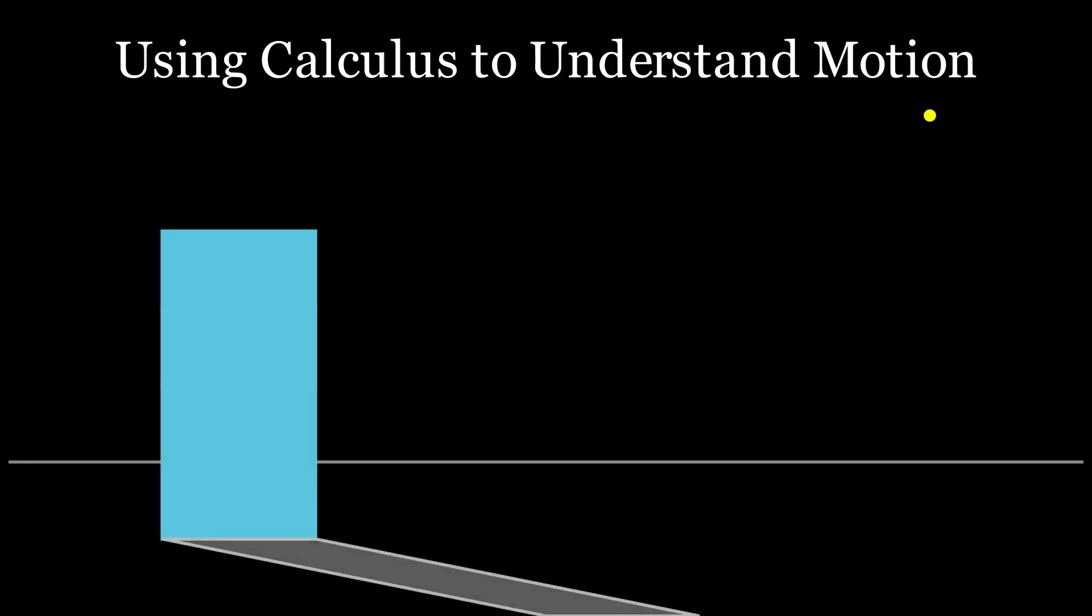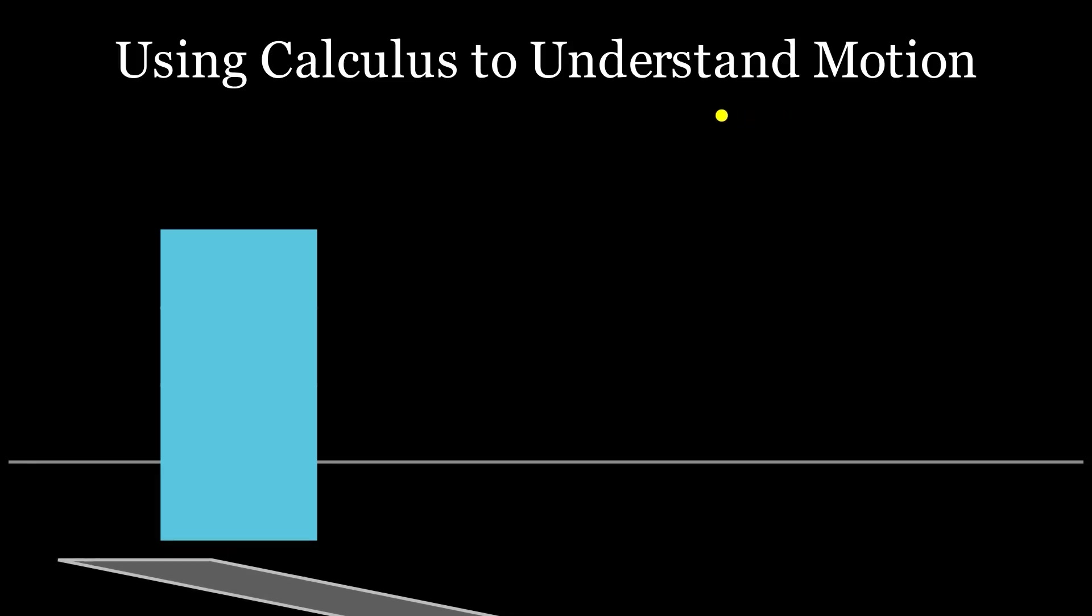Have you ever watched the shadow of a building change throughout the day? It's not random. It's determined by the sun's position and the building's height, combining horizontal and vertical motion. Let's break this motion down. As the sun moves across the sky, seen by the yellow dot, it creates a shadow that changes position and length over time.